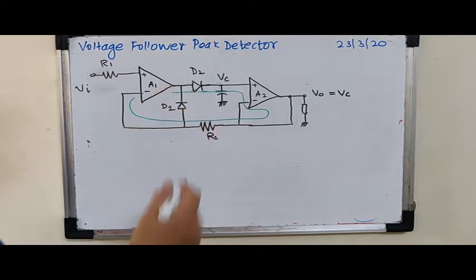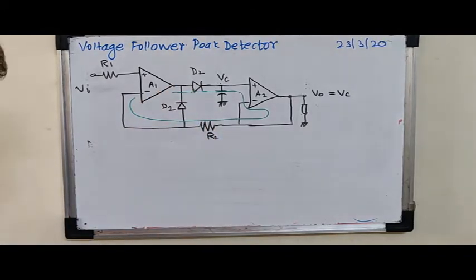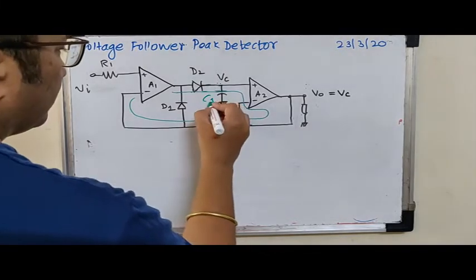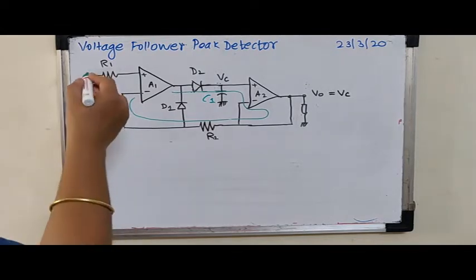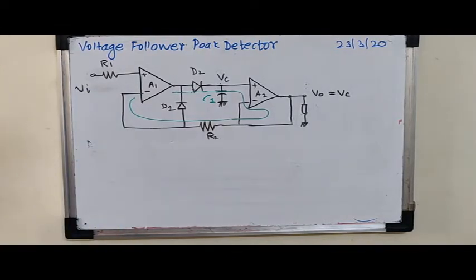So in this case, in this particular configuration, A1 behaves as a voltage follower and charges this capacitor C or C1 right up to the peak value, that is Vp. When Vi is less, which falls below Vp,